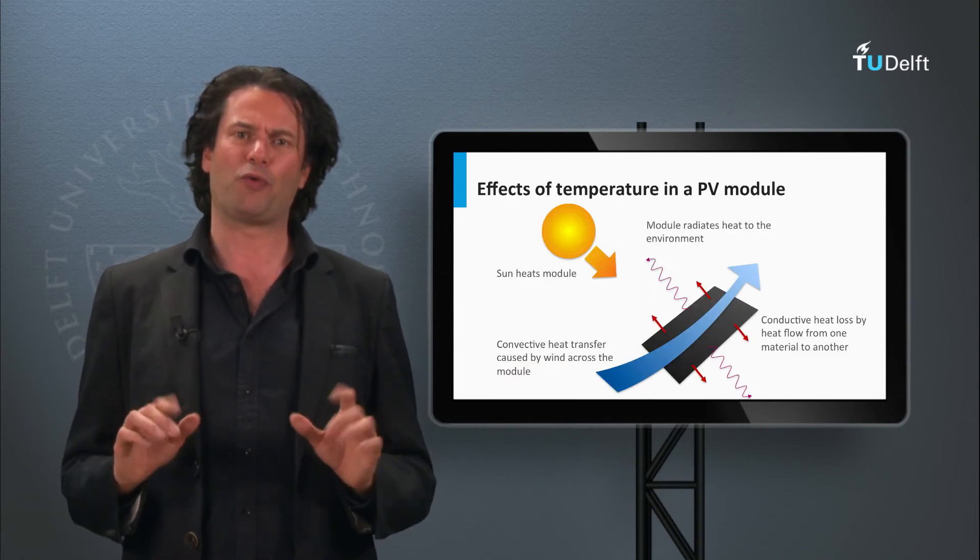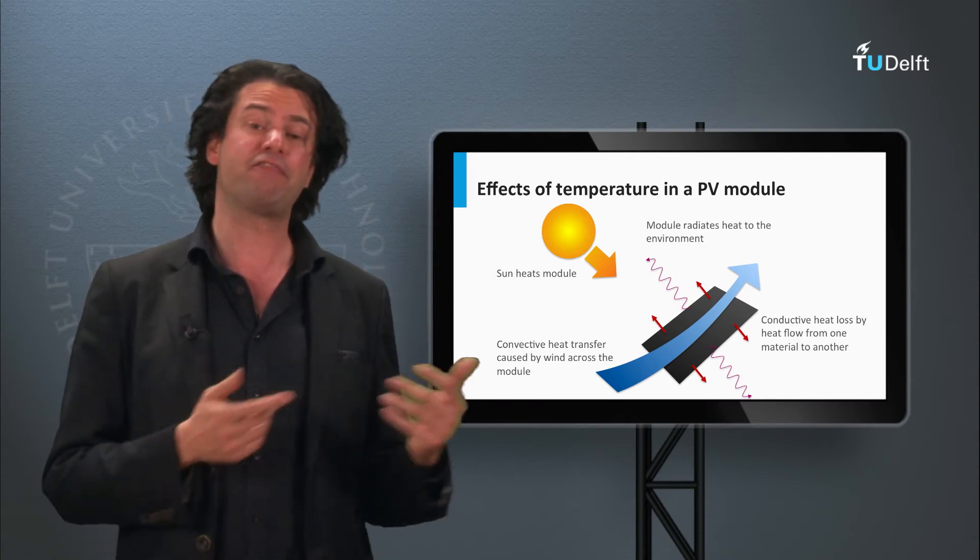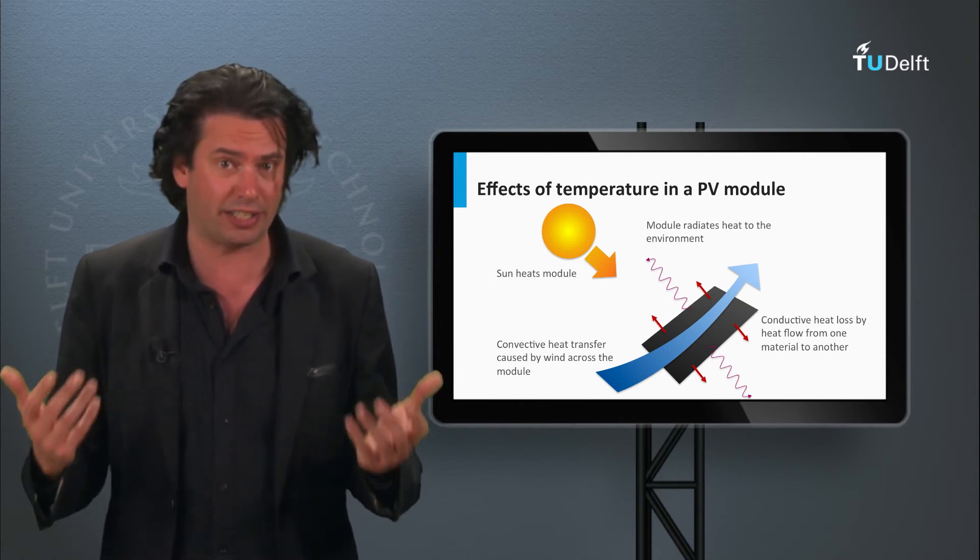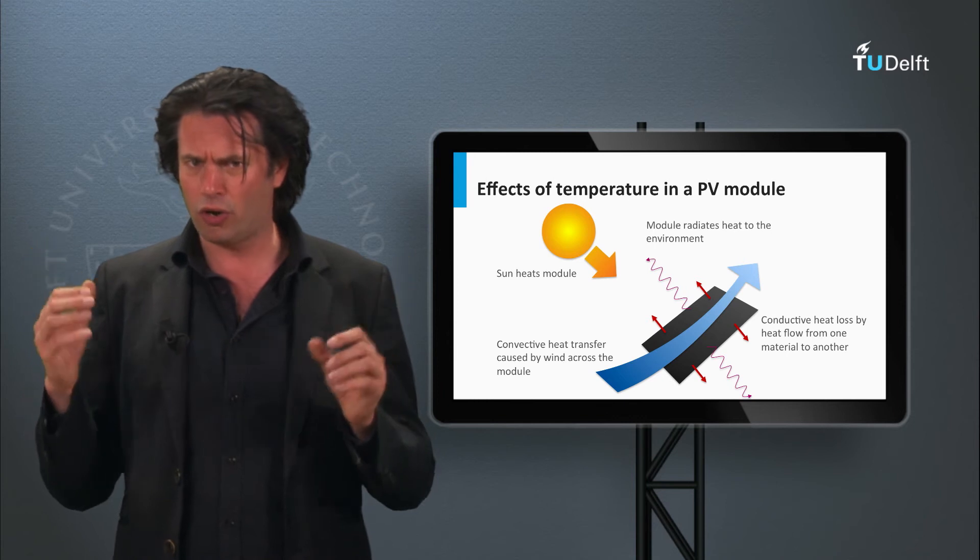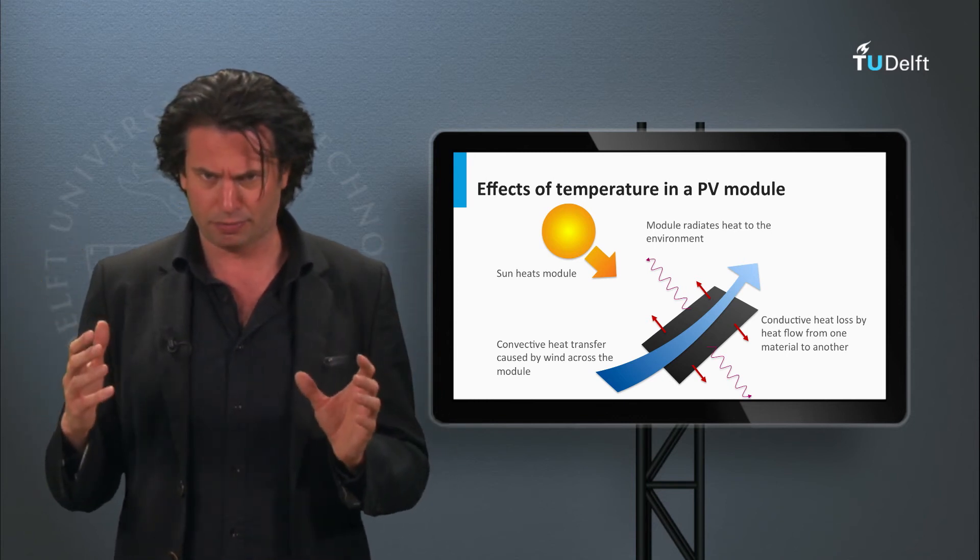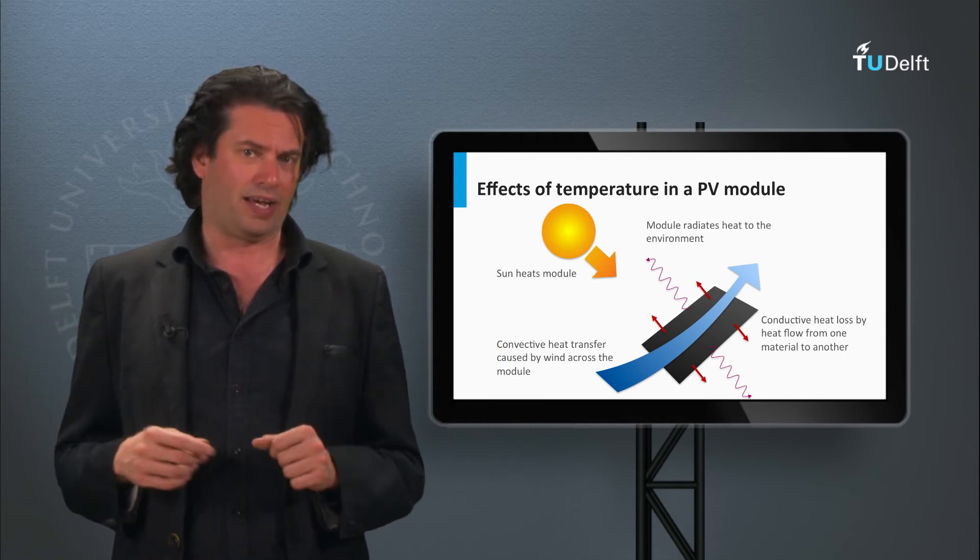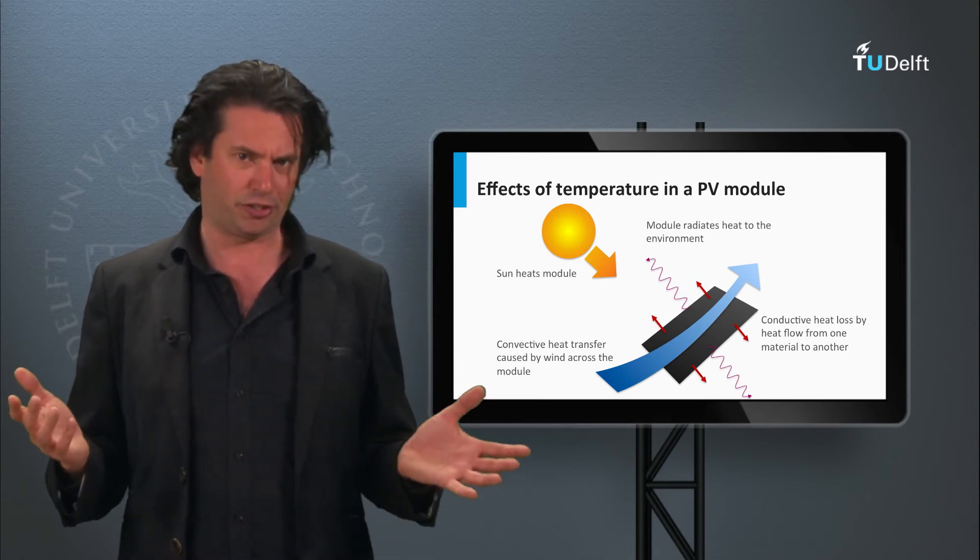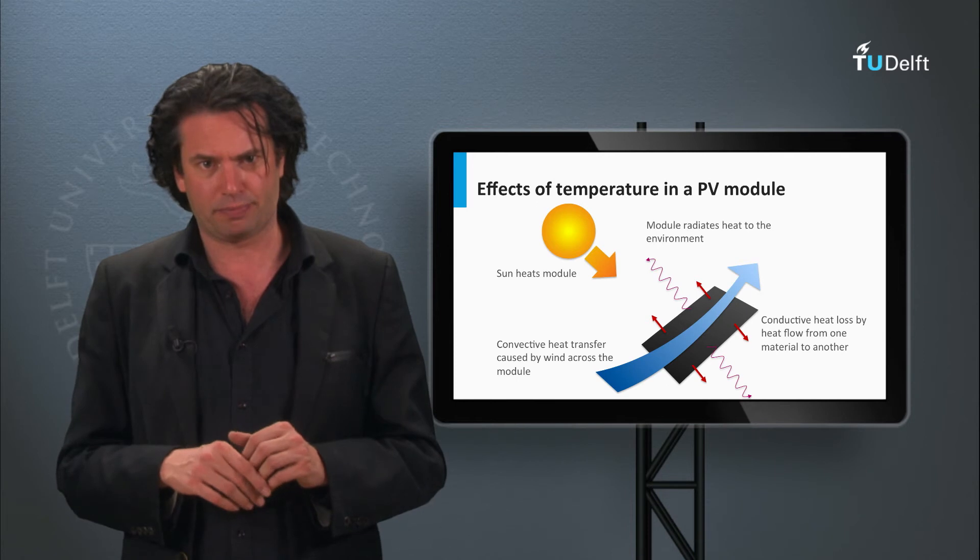Now we must be careful while making these calculations. In the previous example, when we said that the temperature was 30 degrees Celsius, did we mean the PV module's temperature or the ambient temperature? Should the two be the same? As it turns out, the module temperature or the cell temperature, the popular term in literature, can be quite different from the ambient temperature.